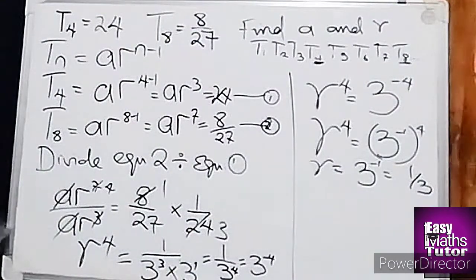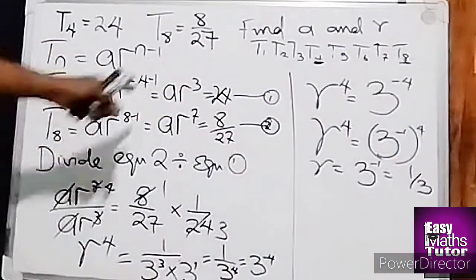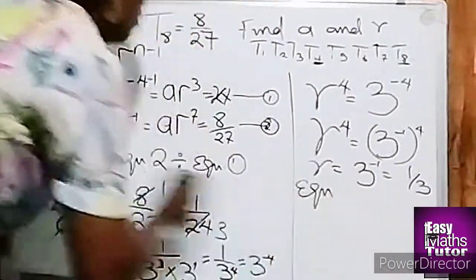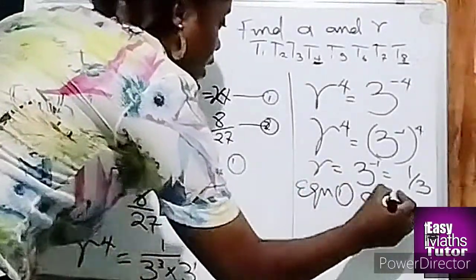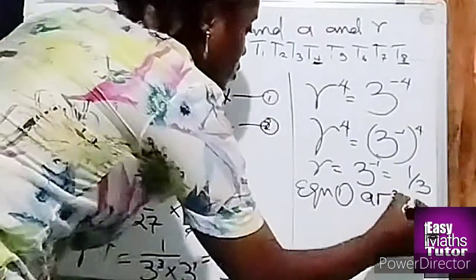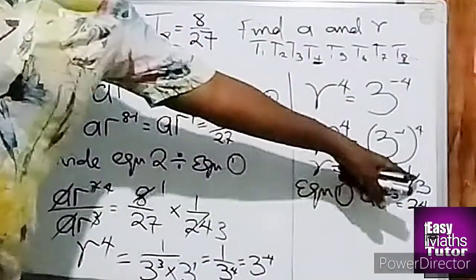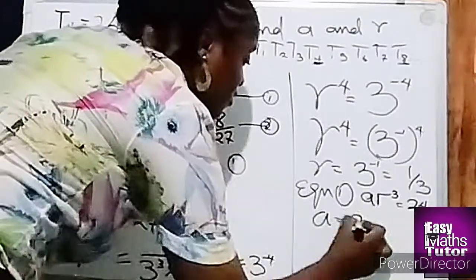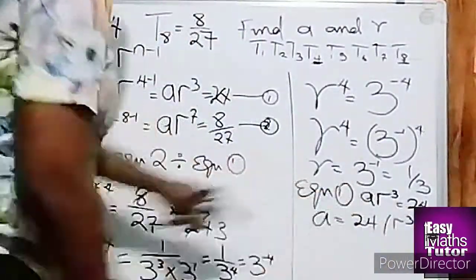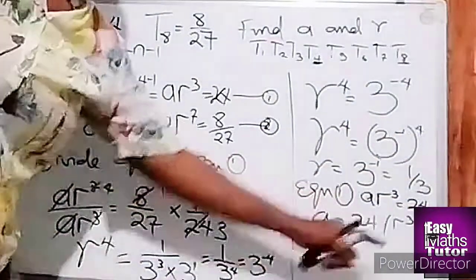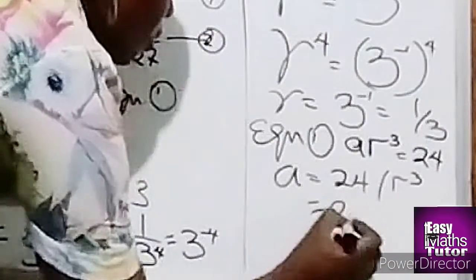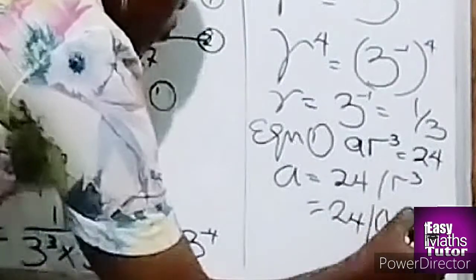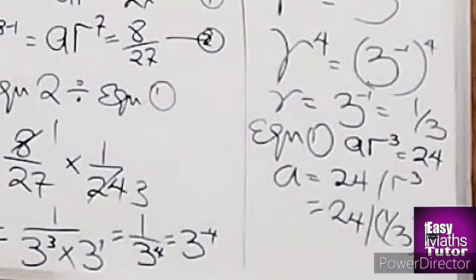So the next stage is to find the value of a. So we're going to take it from any of our equations. We're choosing from equation 1: ar³ equal to 24. So we'll substitute the value of r, which is 1 over 3, into equation 1. If we make a subject of the formula, we will have a equal to 24 over r³. So we'll substitute the value of r in this place, which is 24 over (1/3)³.